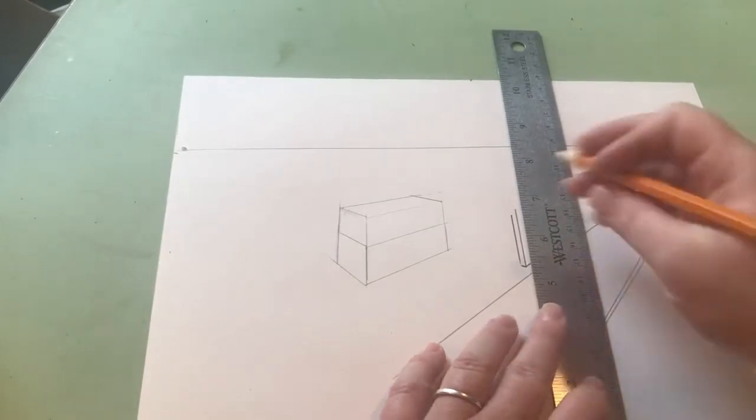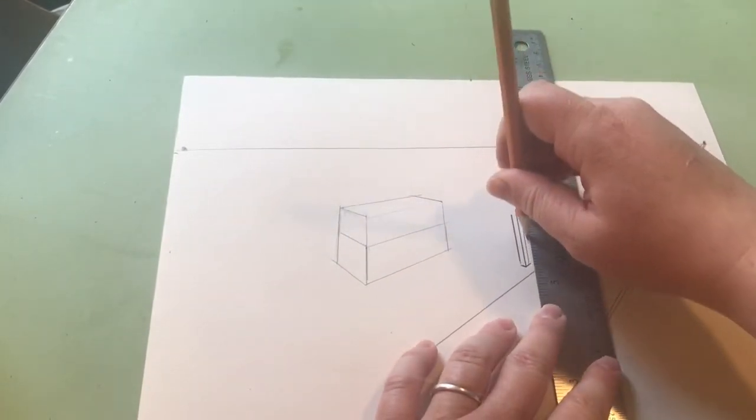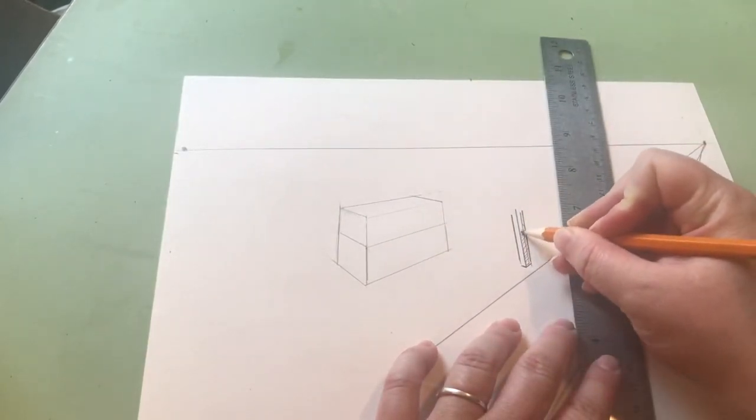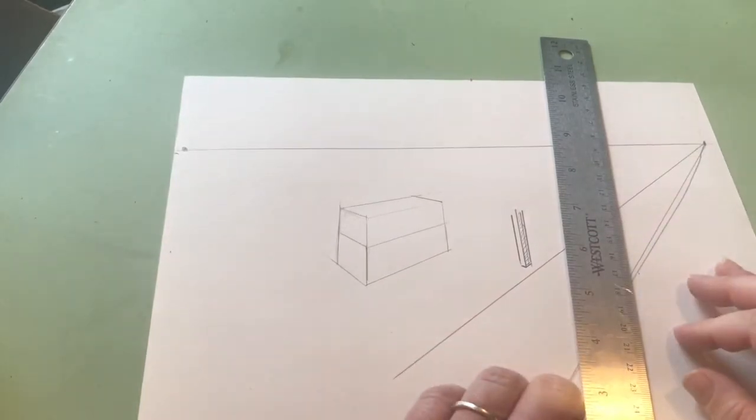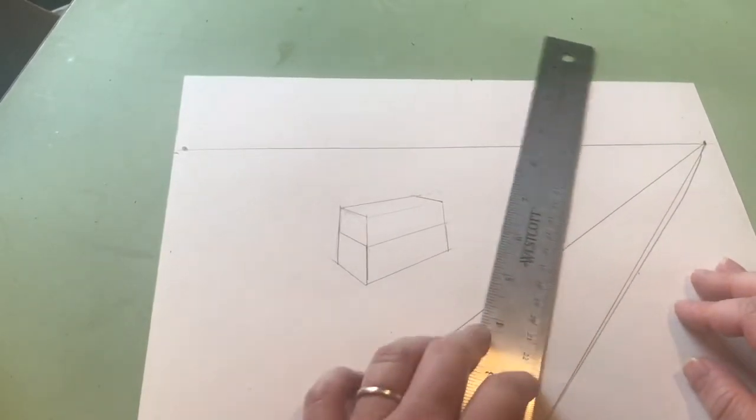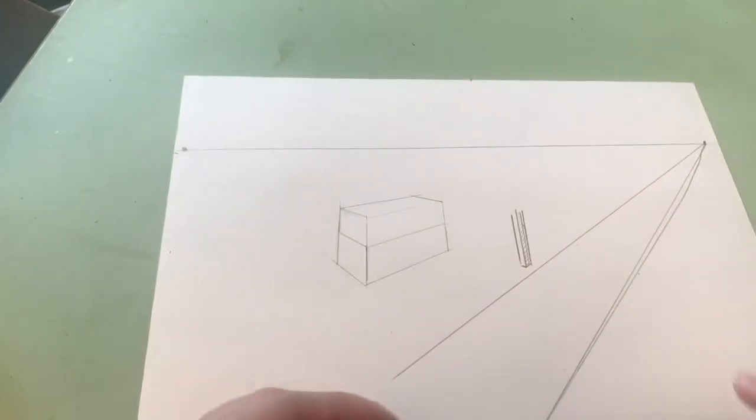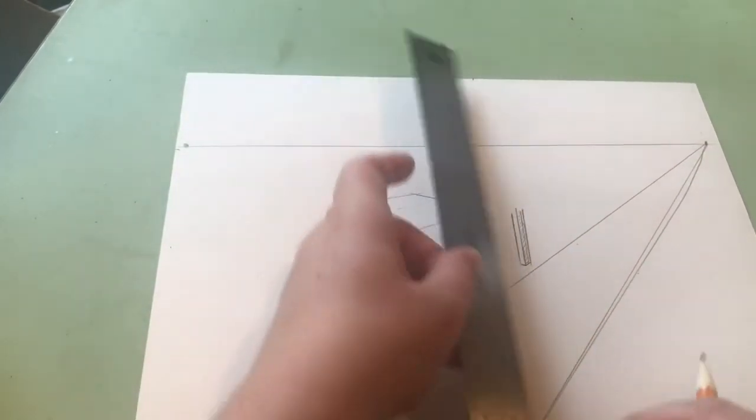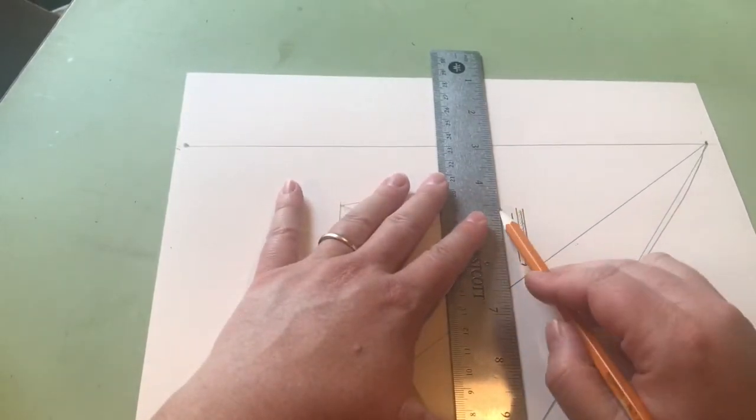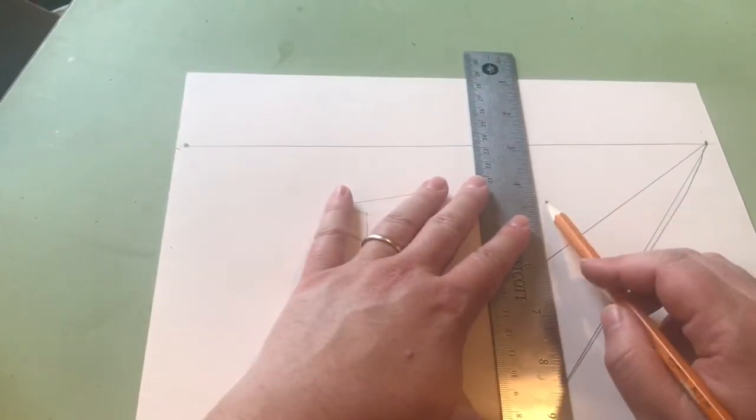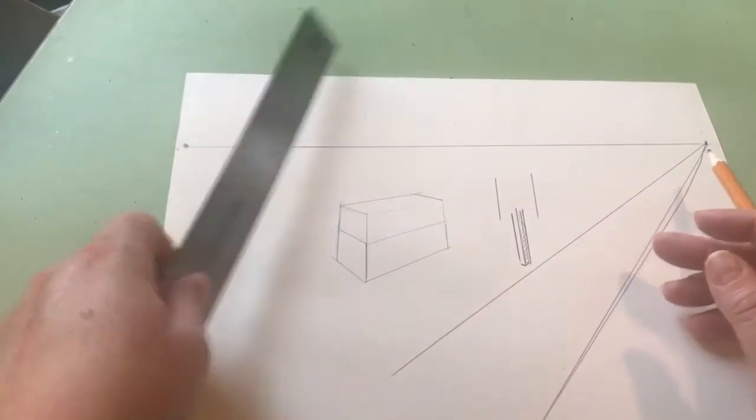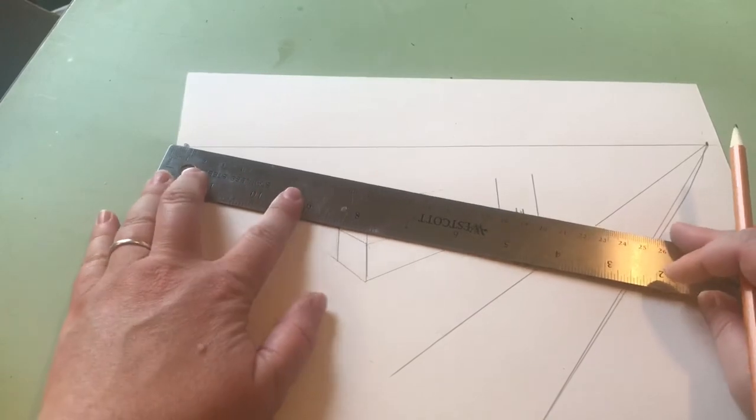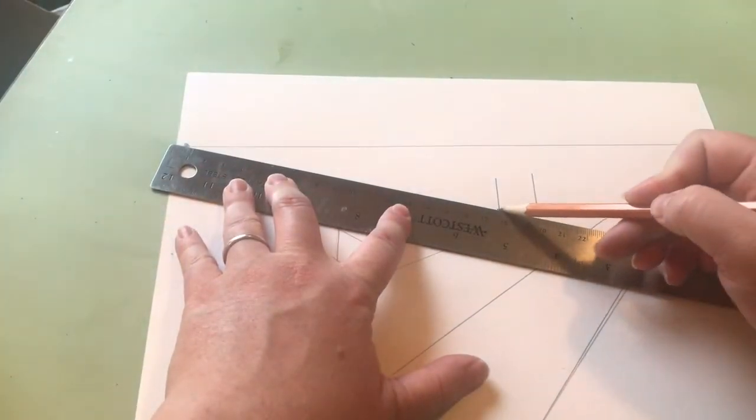If I was making something like a stop sign, I would do a box first and then turn it into an octagon. For the two sides, I would still have the sides be vertical, and then I just have to decide which way it's facing. This way, so I'm gonna go towards the left vanishing point.